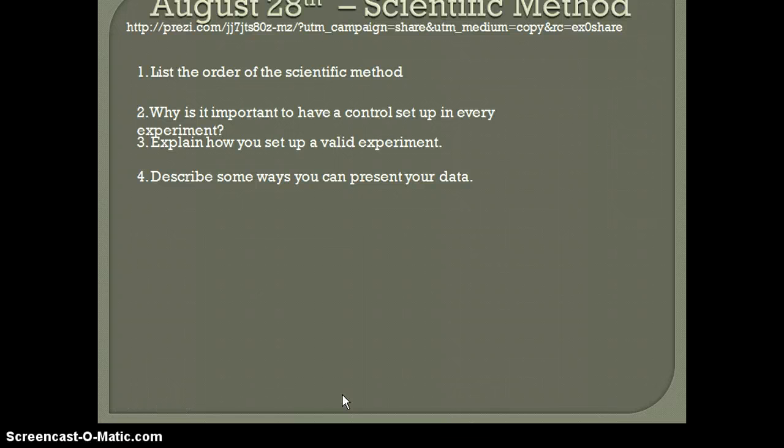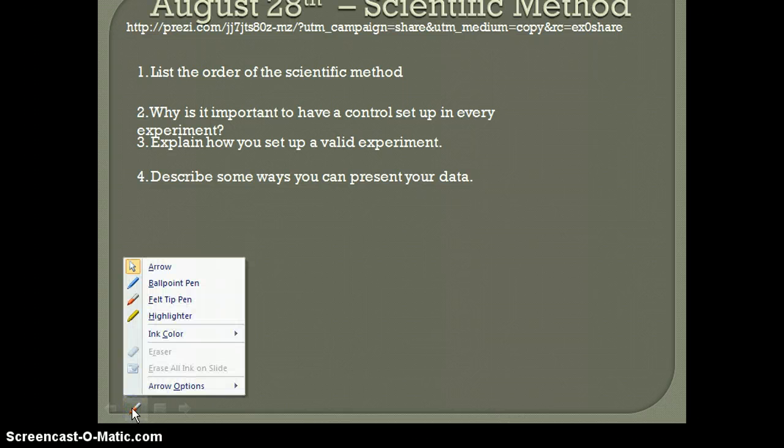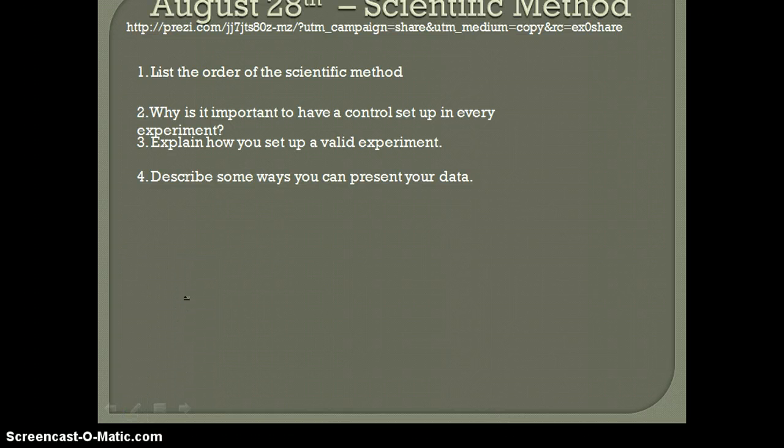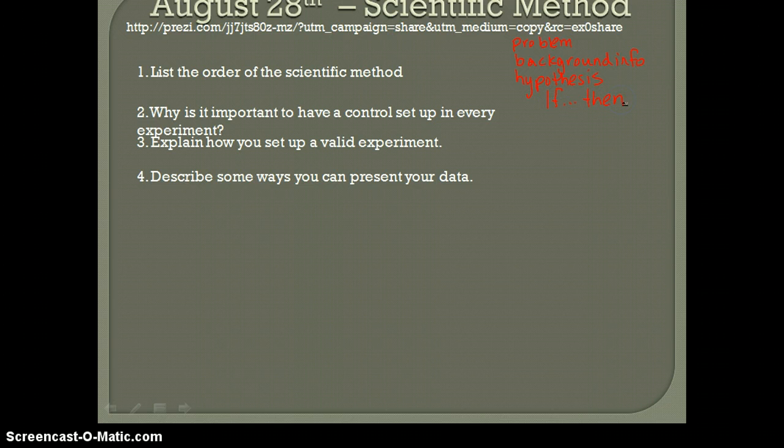Day two we went through scientific method, control setup, things like that. The order of the scientific method, you don't necessarily have to write everything straight in order but have the correct idea. First you would have a problem, then you would get some background information, and then you'd go through a hypothesis. A key part here is making it an if-then statement. If I do this, then this will happen. If I give students caffeine in the morning, then they will perform better on their test.